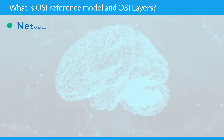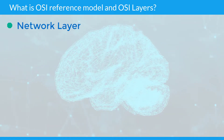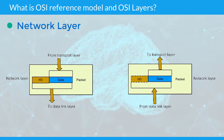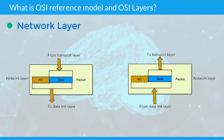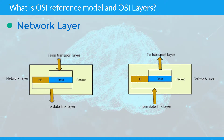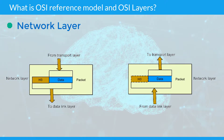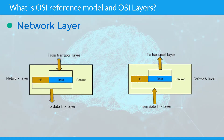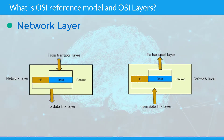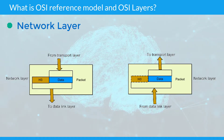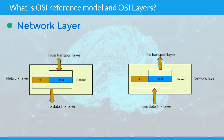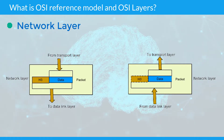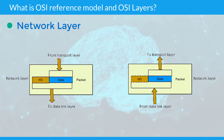Network layer: This layer handles the addressing and routing of the data, sending it in the right direction to the right destination on outgoing transmissions and receiving incoming transmissions at the packet level. IP is the network layer for the internet.